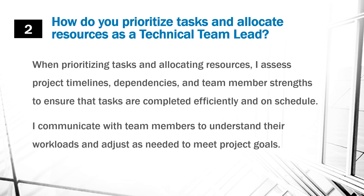How do you prioritize tasks and allocate resources as a technical team lead? When prioritizing tasks and allocating resources, I assess project timelines, dependencies, and team member strengths to ensure that tasks are completed efficiently and on schedule. I communicate with team members to understand their workloads and adjust as needed to meet the project goals.